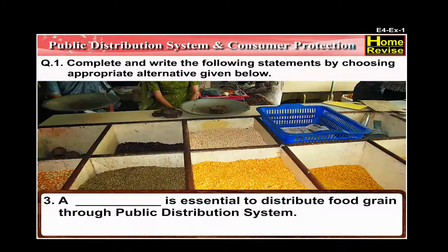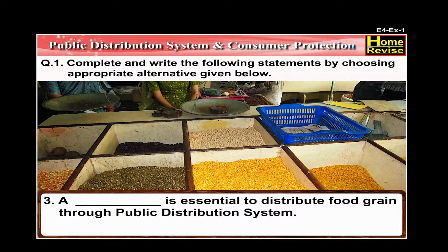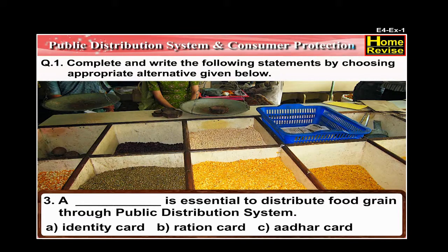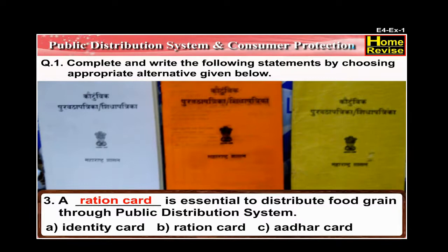Number 3: A dash is essential to distribute food grains through the public distribution system. Options are Identity Card, Ration Card, or Aadhar Card. The answer is: a Ration Card is essential to distribute food grains through the public distribution system.